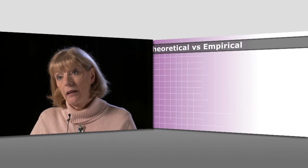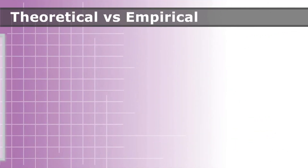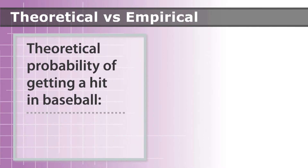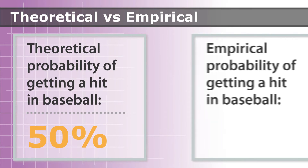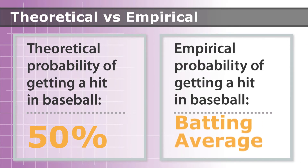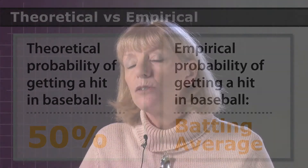Theoretically, when a player goes to bat, they're going to get a hit half the time, because when they go up to the plate, they're either going to get a hit or they're not. So there are two outcomes, and one of those outcomes is getting a hit. So theoretically, the probability that a player gets a hit is one half. However, players don't get a hit half the time they go up. What you see in their batting average is the empirical probability — what actually has happened. Based on the last 10 times they've been up to bat, they may have gotten a hit twice. So empirically, the probability that they would get a hit is two tenths. That's empirical probability — what happens in real life. Theoretical probability is what happens in theory.